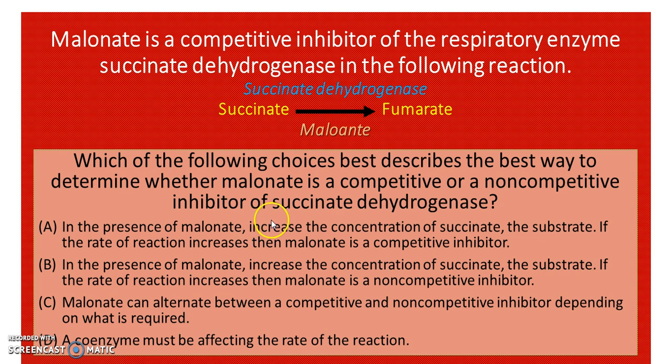Option A: In the presence of malonate, increase the concentration of succinate (the substrate). If the rate of reaction increases, then malonate is a competitive inhibitor.